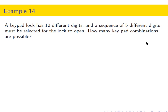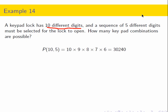We have a keypad lock with 10 different digits, and assuming digits can't repeat, we need to find how many five-digit codes are possible. We have five different digits chosen from 10, so it's 10 permute 5, which equals 10 factorial divided by 5 factorial.